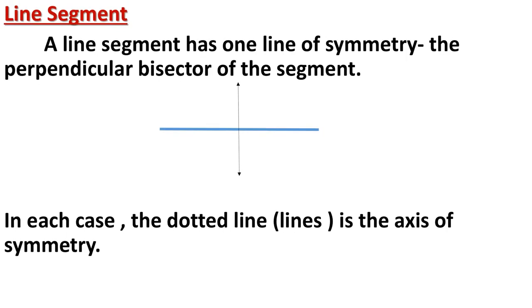A line segment has one line of symmetry, known as the perpendicular bisector of the segment. Perpendicular means making a 90-degree angle, and bisector means dividing into two equal parts. This line divides the line segment into two equal parts so they overlap each other. The dotted line shown is the axis of symmetry.